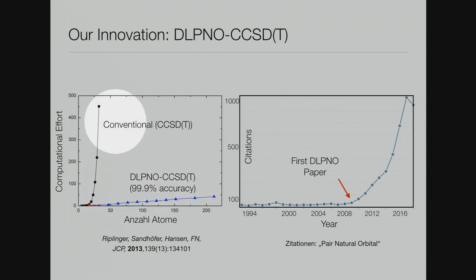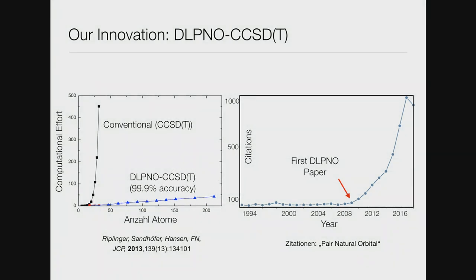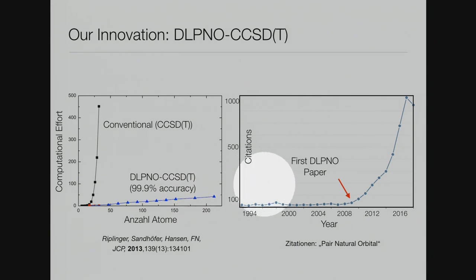The canonical coupled cluster method scales very steeply with system size — the number of atoms — whereas DLPNO-CCSD(T) scales linearly with system size and with a small pre-factor. That means instead of being able to treat ten atoms, you're able to treat hundreds of atoms with that method. It is now probably the most accurate method that you can apply routinely to molecules, and we have worked on this with an entire group for about ten years. Since the first paper, the citations have been exponentially rising, and it's well on its way to becoming one of the substantially used quantum chemical methods in computational chemistry.